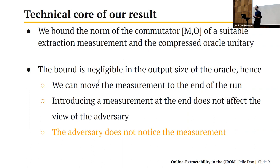The technical core of our result is bounding the disturbance of a suitable extraction measurement. We do this by bounding the norm of a certain commutator: that of the measurement and a unitary O describing the evolution of the compressed oracle for a single query. We obtain a bound that is negligible in the output size of the oracle. This means that in the analysis, we are free to move the measurement around. The extractor performs the measurement at runtime, but in the analysis we can commute it past all oracle queries and local computations, pushing it to the end — where introducing a measurement does not affect the adversary's view since they're done.